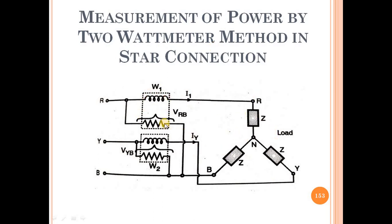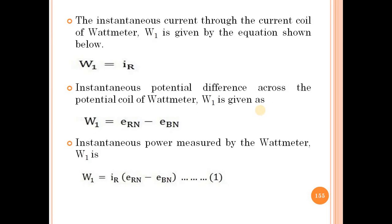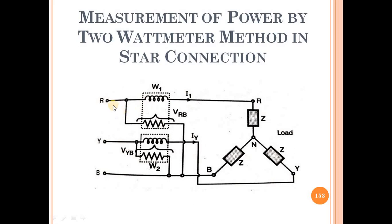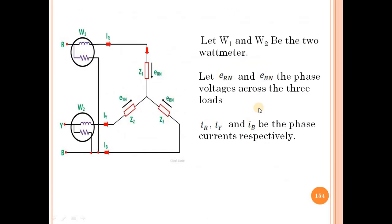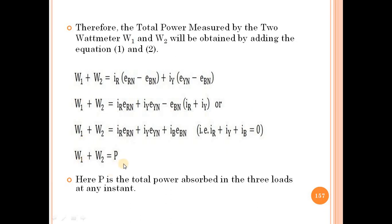In the star connection, the R line and Y line — R phase and Y phase — have the current coils connected to the watt meter. The pressure coil is connected to the third phase, the third terminal and B. So the pressure coils are connected to the B terminal. The star connection total power T is the total power absorbed in the three loads at any instant.